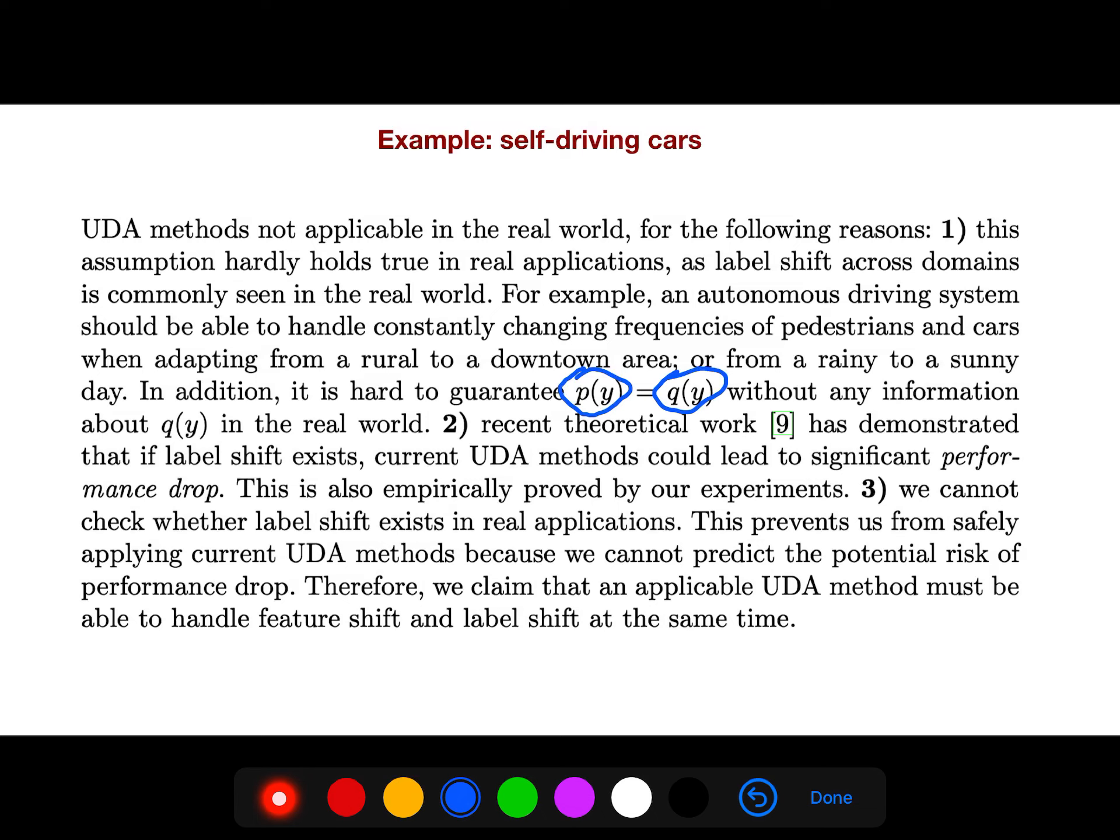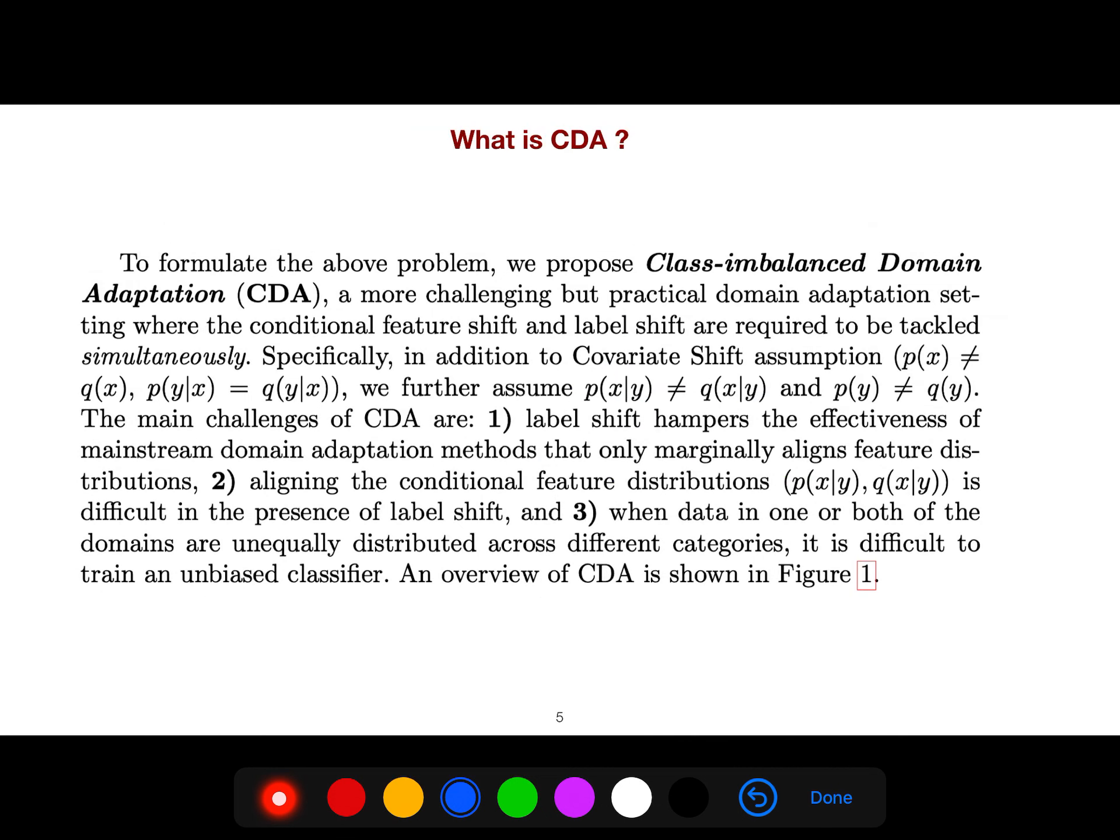Recent theoretical work has demonstrated that if label shift exists, current UDA methods could lead to significant performance drop. And third, we cannot check whether label shift exists in real applications. This prevents us from safely applying current UDA methods because we cannot predict the potential risk of performance drop.